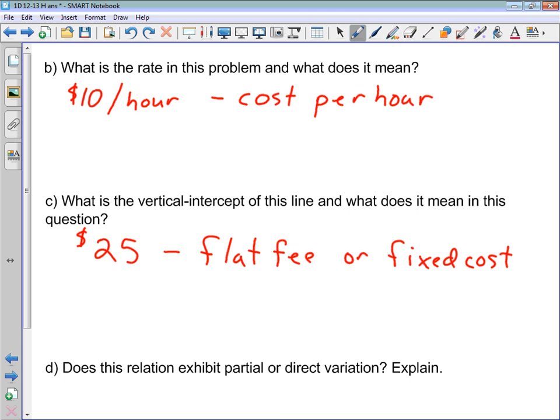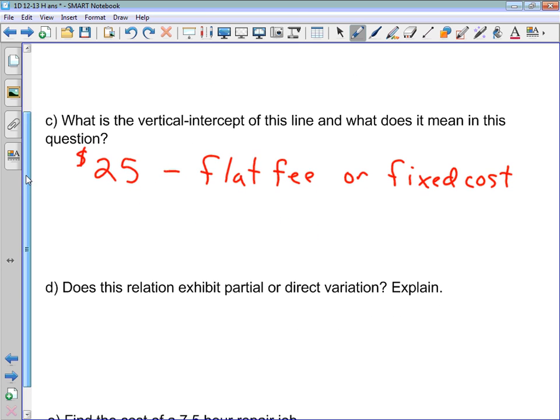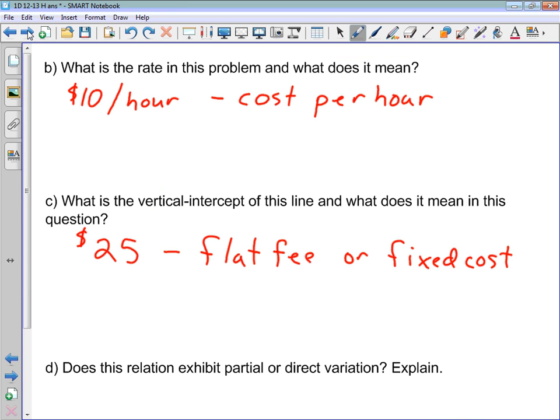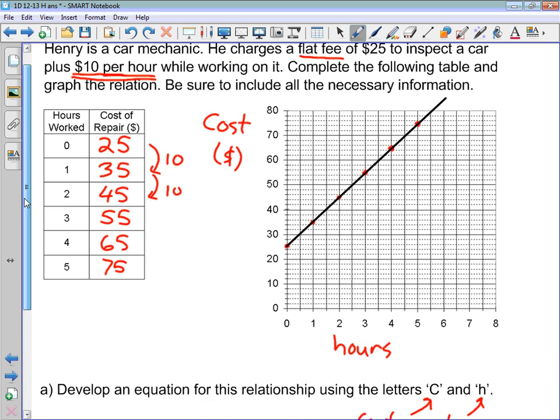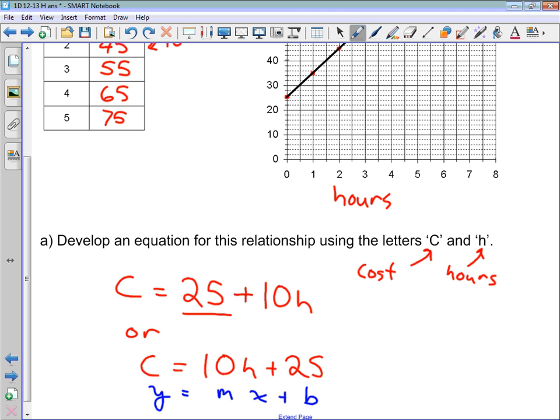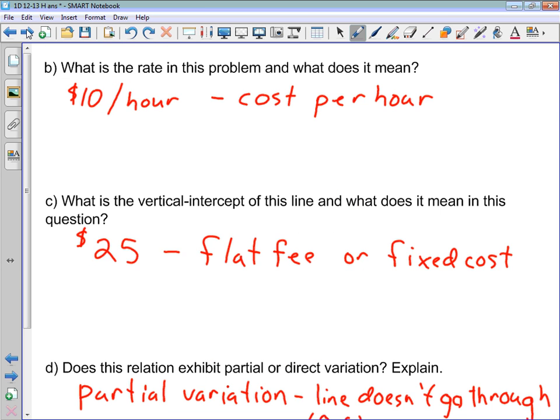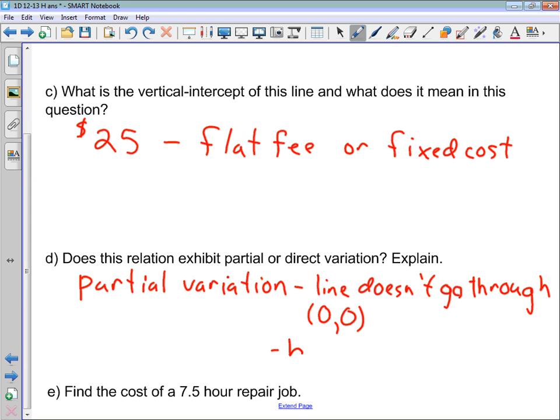Does this relationship exhibit partial or direct variation? Remember, direct variation, the line goes through the origin, 0, 0. Does our line go through? Nope. So this is partial variation. Okay, and we could say something like, line doesn't go through 0, 0. And what if we didn't have a graph, how could we tell? We could tell because in our equation, back here, our y-intercept, 25, this number here that represents our y-intercept, or our b value, is not 0. So we could have said b, or our y-intercept, does not equal 0.